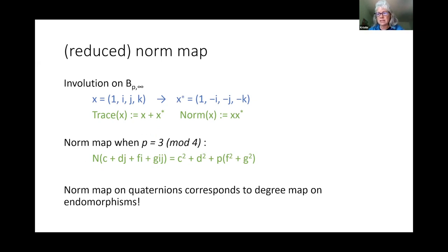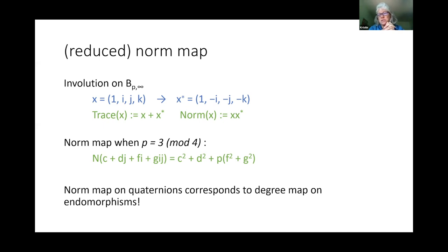The next thing we need to know is that there's a norm form on this quaternion algebra. There's a little confusion because in the quaternionic setting we usually talk about the reduced norm and reduced trace. Throughout the literature in this area you'll see it referred to just as norm — strictly speaking it's the reduced norm, but I'm going to use the term norm, which is the standard shorthand.